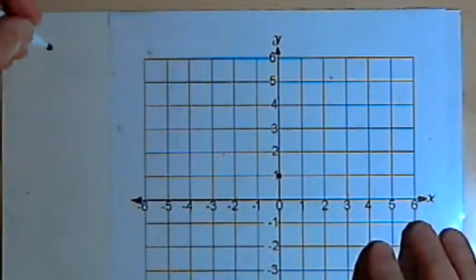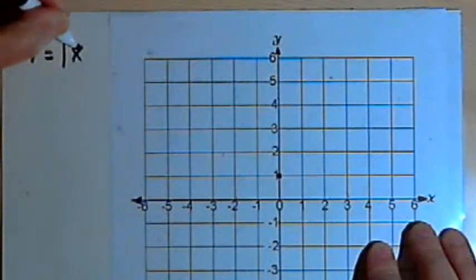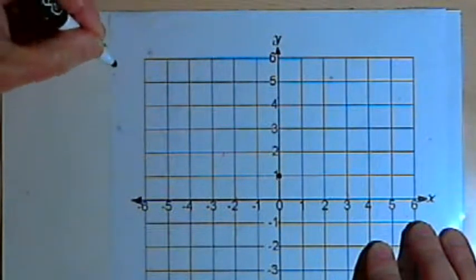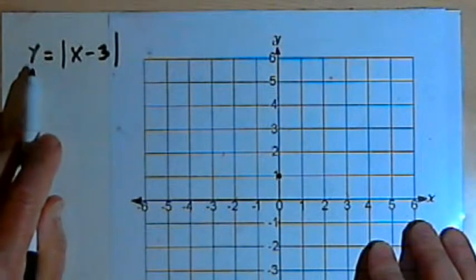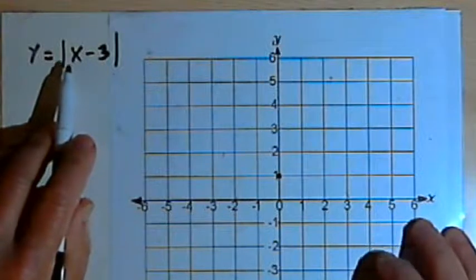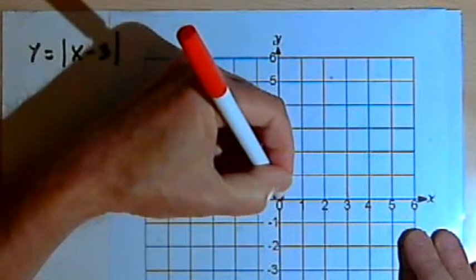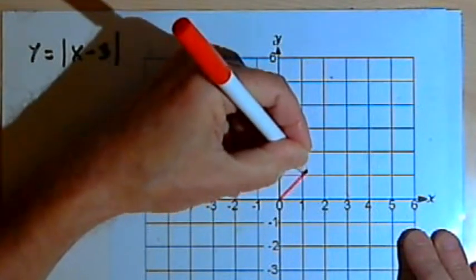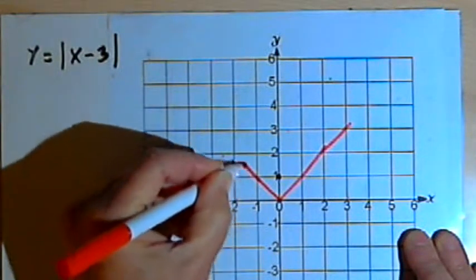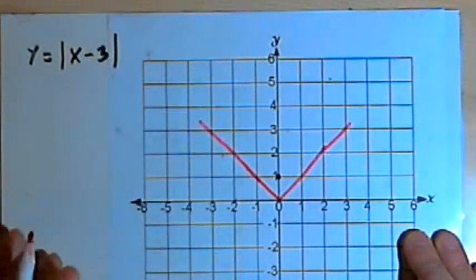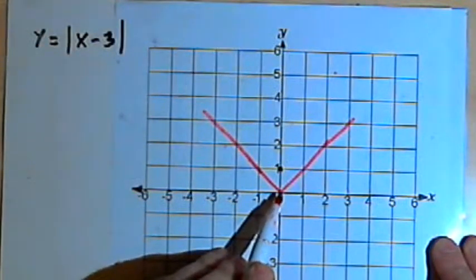Let's start with something like y equals the absolute value of x minus 3. The basic function we're dealing with is y equals the absolute value of x. What I'm going to do for reference is just sketch a quick graph of the basic function y equals the absolute value of x, and that's going to be a V. It will open upwards and have its center at the origin.